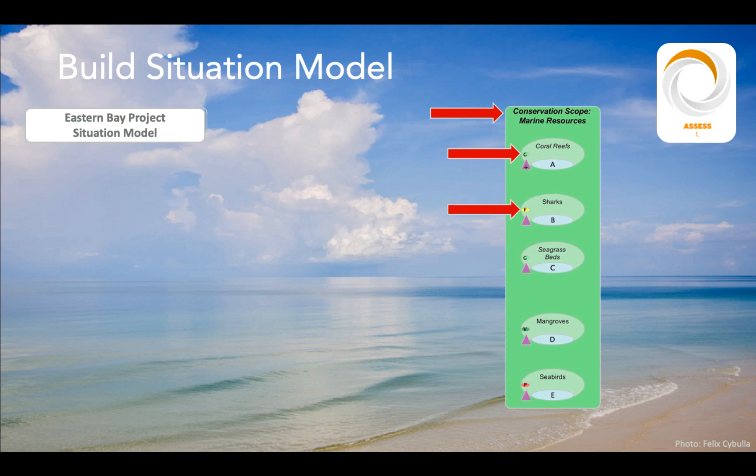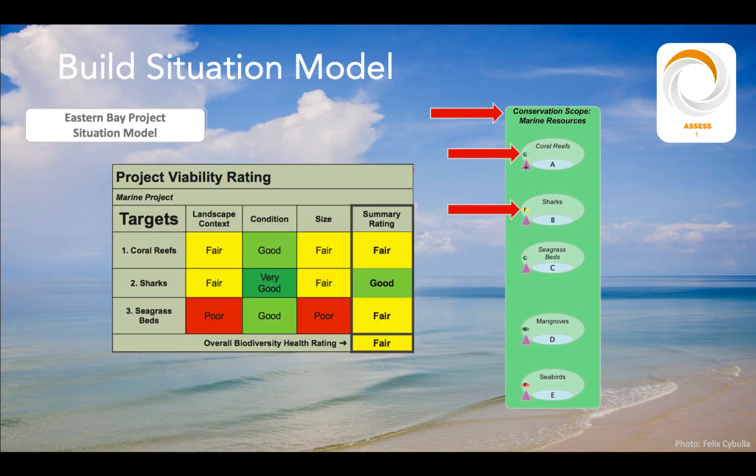Also note the small colored letters such as G, F, V, and P on the left-hand side of each conservation target circle. These come from the target viability that you carried out a few steps back, and they stand for good, fair, very good, and poor.